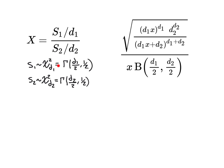The chi-squared distribution is a special case of the gamma distribution. Chi-squared distributed with d1 degrees of freedom is the same as gamma distributed with parameters d1/2 and 1/2. And chi-squared distributed with d2 degrees of freedom is the same as gamma distributed with alpha parameter d2/2 and beta parameter 1/2.